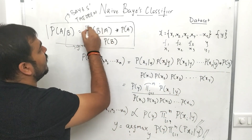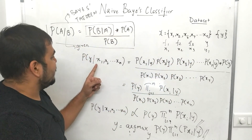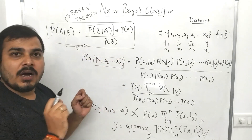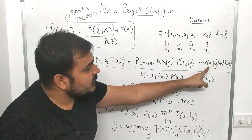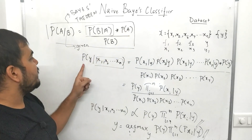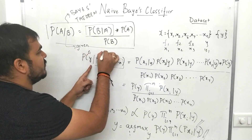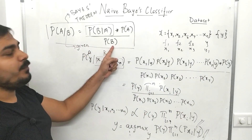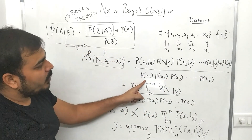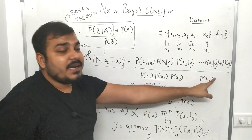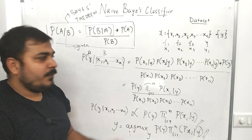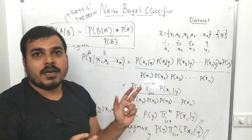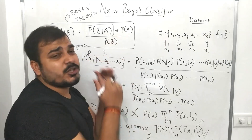We multiply all these features together because all features are given in my dataset, and considering these features I need to find out the output. Then multiplied by probability of A — which here is y — so this is my A and x1...xn is my B. I write it as probability of y, divided by probability of B — which is again probability of x1 multiplied by probability of x2, x3 till xn. We are just converting this equation so that we can solve this particular machine learning classification problem statement.